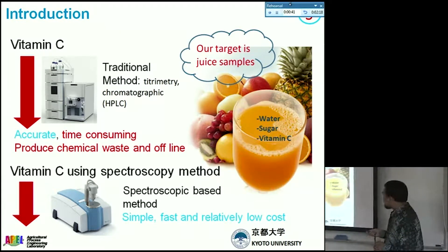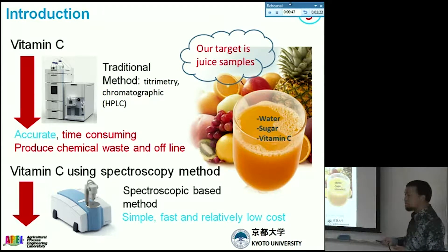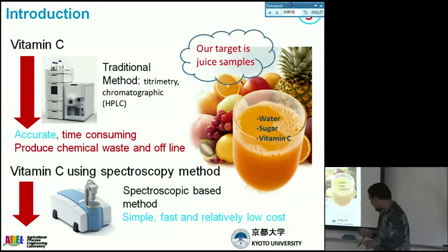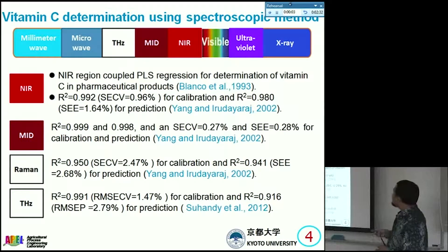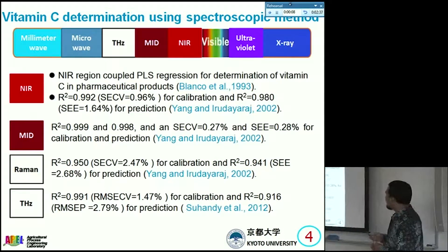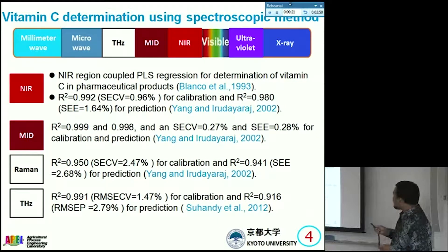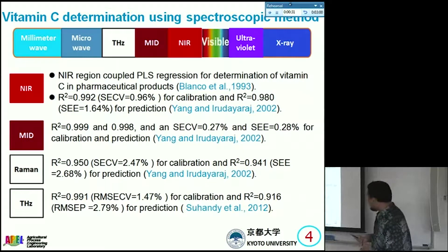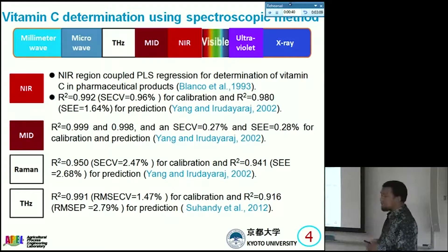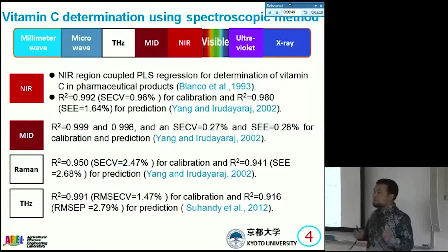Recently, the use of spectroscopic-based methods for vitamin C determination is becoming popular because of simple sample preparation, fast measurement, and low cost. Vitamin C determination using spectroscopic methods has been conducted by several researchers. For example, in 1993, Blanco et al. used the near-infrared region coupled with PLS regression for vitamin C determination in powder and liquid samples. And then Swahandi et al. used the terahertz region to determine vitamin C concentration in aqueous solution samples. In the present study, we apply several chemometric methods to develop a robust and simpler model for vitamin C determination, especially in the mid-infrared region.